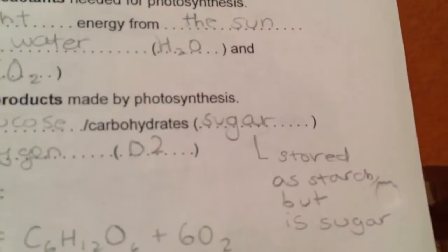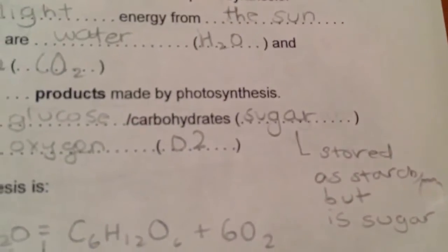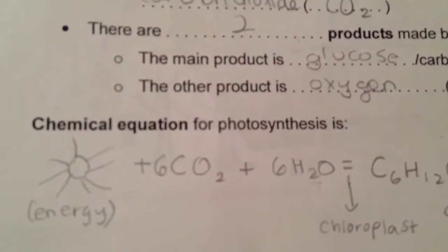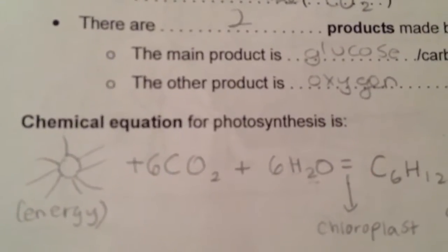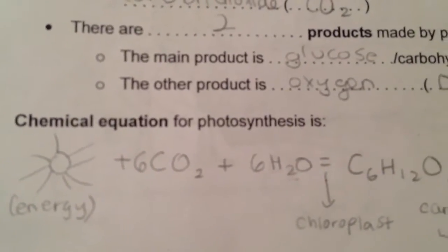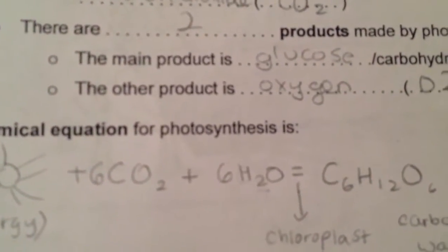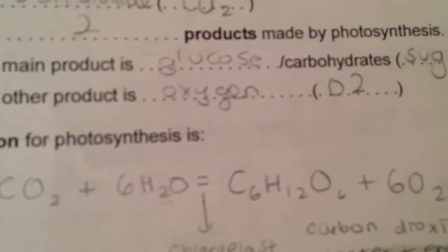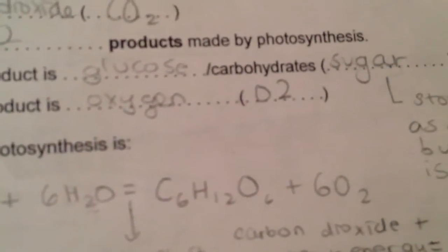Sugar is stored as starch, but used as sugar. The chemical equation for photosynthesis is: energy + 6CO2 + 6H2O, and in the chloroplast this is turned into C6H12O6 + 6O2.